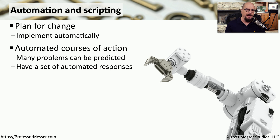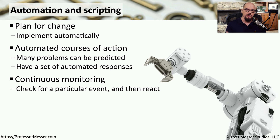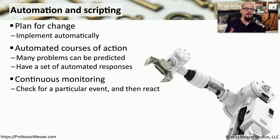We can also create automation around the deployment of these applications and automation based on how we react to problems that might occur when that application is executing. For example, if we know that the storage area of log files for an application was to fill up, it would cause the application to fail. So we might want to constantly monitor that particular drive and make sure that it never gets too full or too highly utilized. If we do constantly monitor this drive and we notice that it's running out of drive space, we can then automatically work behind the scenes to delete any older files or free up any needed disk space.